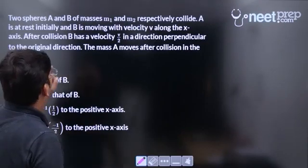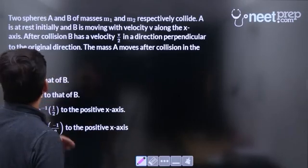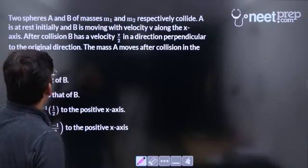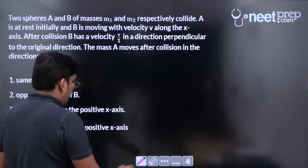Two spheres A and B of masses m1 and m2 respectively collide. A is at rest initially and B is moving with velocity v along the x-axis.